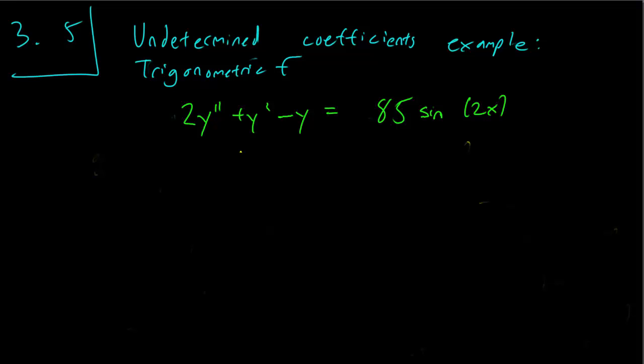An initial guess might be that y is simply A times sine 2x. But as you can see the y prime term is going to cause us problems. y prime is going to be equal to 2A cosine of 2x and y double prime is going to be equal to minus 4A sine 2x.